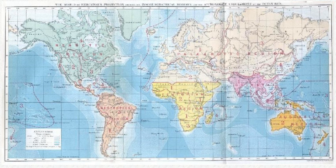Phytogeography is the branch of biogeography that studies the distribution of plants. Zoogeography is the branch that studies distribution of animals. Knowledge of spatial variation in the numbers and types of organisms is as vital to us today as it was to our early human ancestors, as we adapt to heterogeneous but geographically predictable environments.